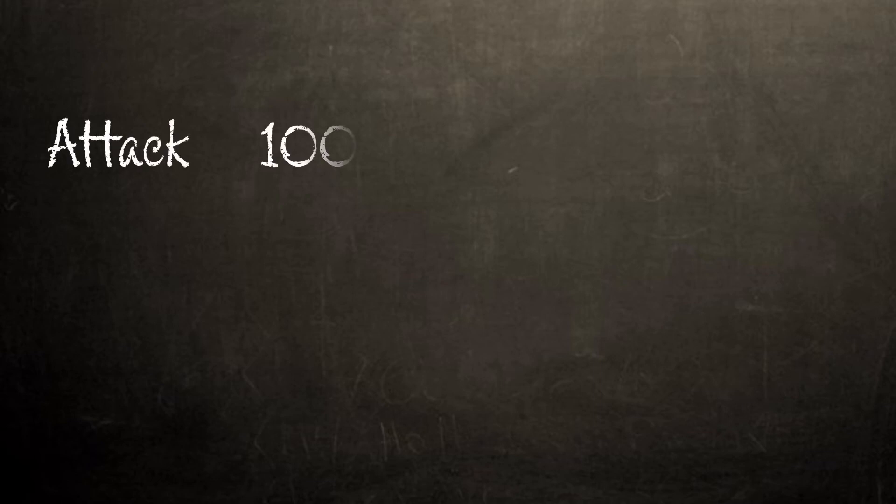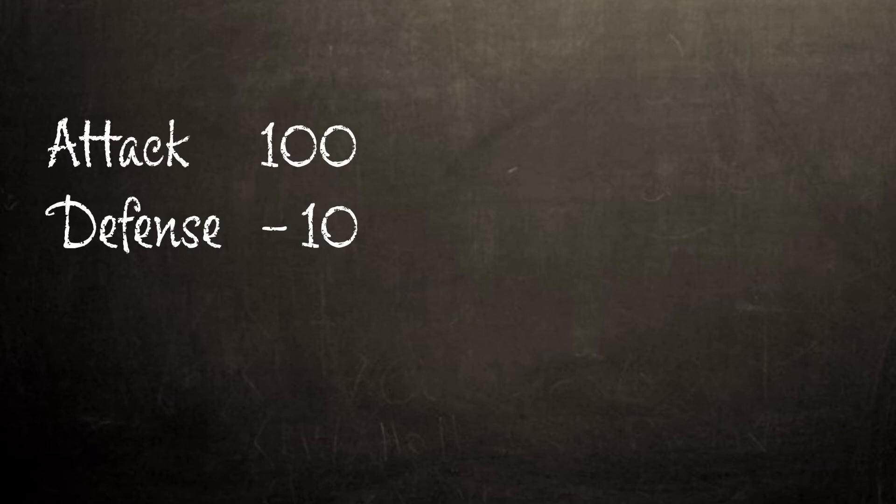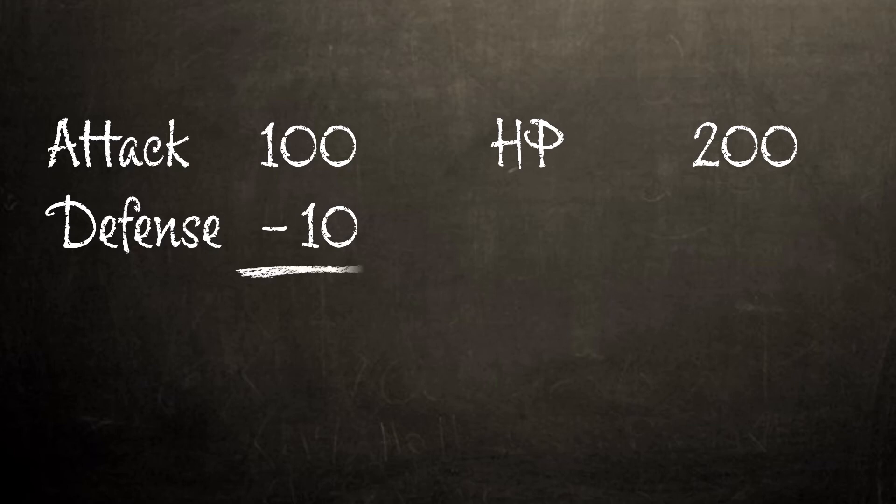Let's look at a very fictitious example to illustrate how these all fit together with some fake but easy-to-understand numbers. Let's say you have an attack stat of 100. Your opponent has a Defense stat of 10 and an HP of 200. Their defense will absorb 10 damage from your attack, with the remaining 90 hitting their troop.